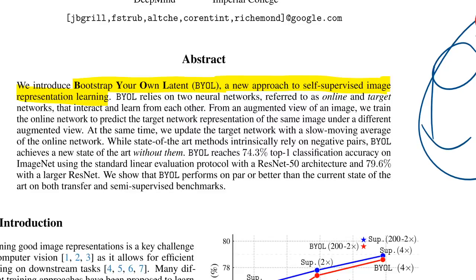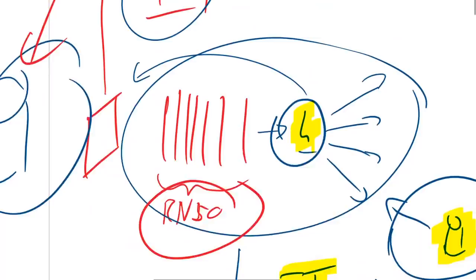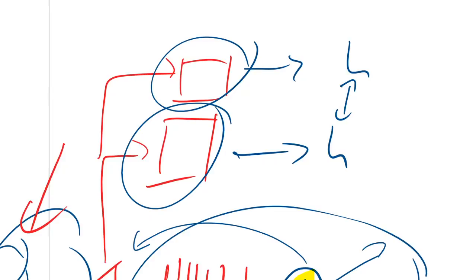BYOL relies on two neural networks — online and target — that interact and learn from each other. From an augmented view of an image, you train the online network to predict the target representation of the same image under a different augmented view. So you make two slightly different versions of the same image, and their representations should be close.